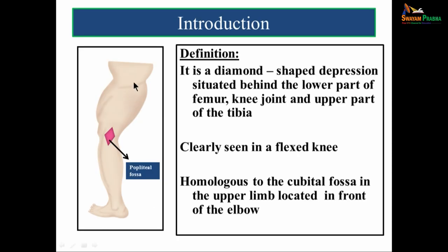Looking at this picture, this is the thigh, this is the knee joint, and this is the calf and the foot. The popliteal fossa, by definition, is a small diamond-shaped depression situated behind the lower part of the femur, behind the knee joint, and the upper part of the tibia. The fossa is very clearly seen in a flexed knee and is homologous to the cubital fossa in the upper limb, located in front of the elbow.